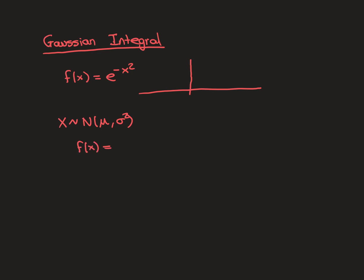The probability density function would be 1 over the square root of 2π times sigma, times e to the negative half of (x minus mu over sigma) all squared.